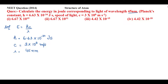To cancel the units, I'll convert the wavelength into meters. Since 1 nanometer equals 10⁻⁹ meter, 45 nanometers becomes 45 × 10⁻⁹ meters. So the wavelength in meters is 45 × 10⁻⁹ m.